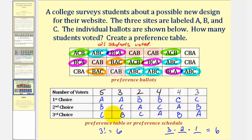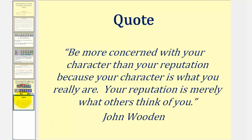So based upon the voting method, we would normally use this preference table to gather the information needed to select the winner. I hope you found this introduction helpful.